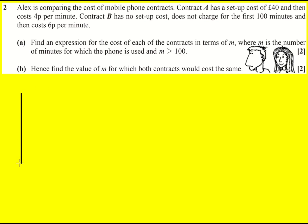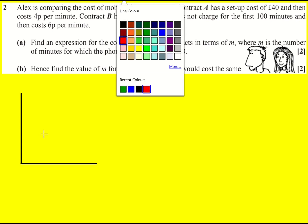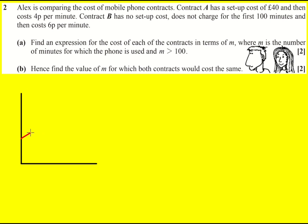I'm going to illustrate these two different contracts with a diagram. Contract A costs money to start with so it's going to start up here and then it's 4p per minute, so every minute it goes up by four essentially, that's going to be the gradient.